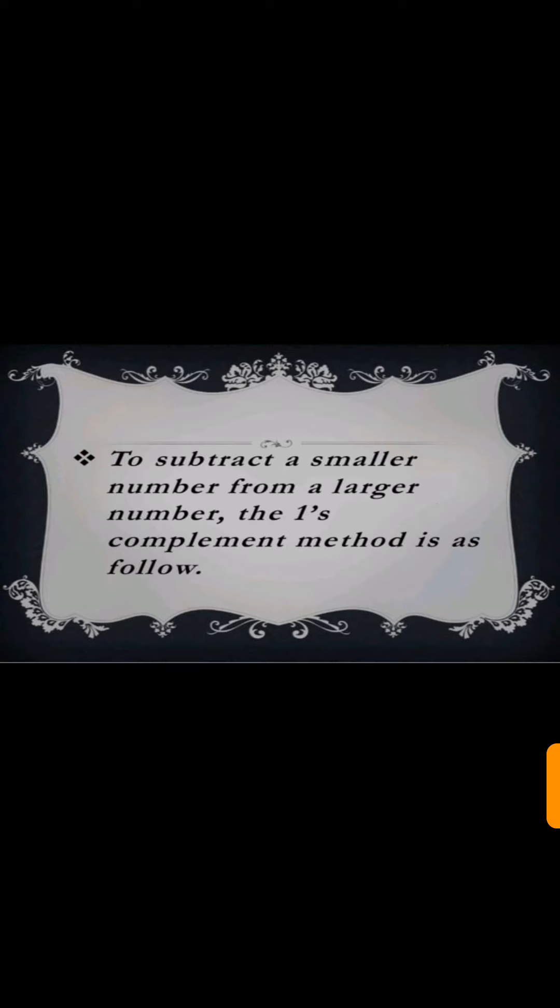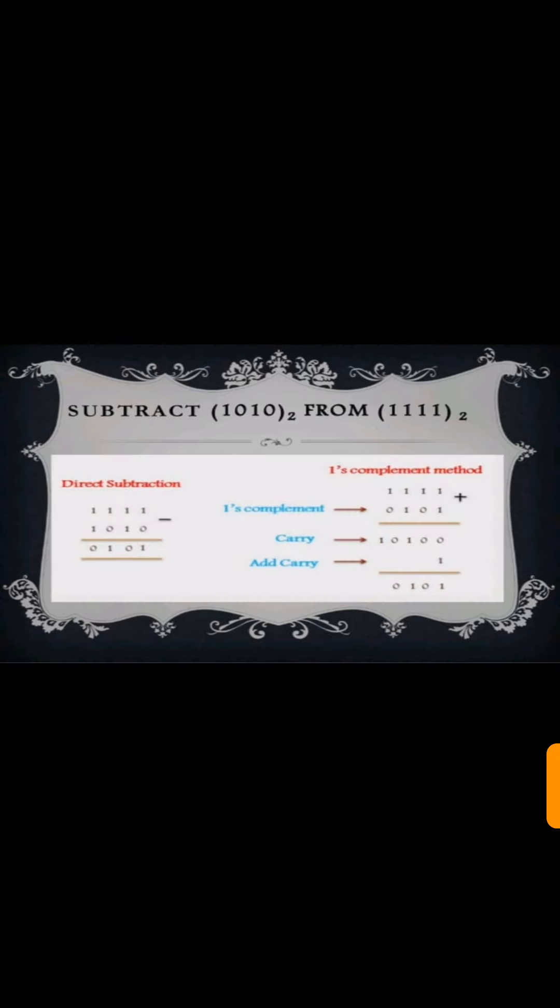To subtract a smaller number from a larger number, the one's complement method is as follows. Here you can see from the example that two numbers are given. One is 1010, that is 10, and the other number is four ones, that is 15. Here the direct subtraction is shown as well as the subtraction using two's complement.